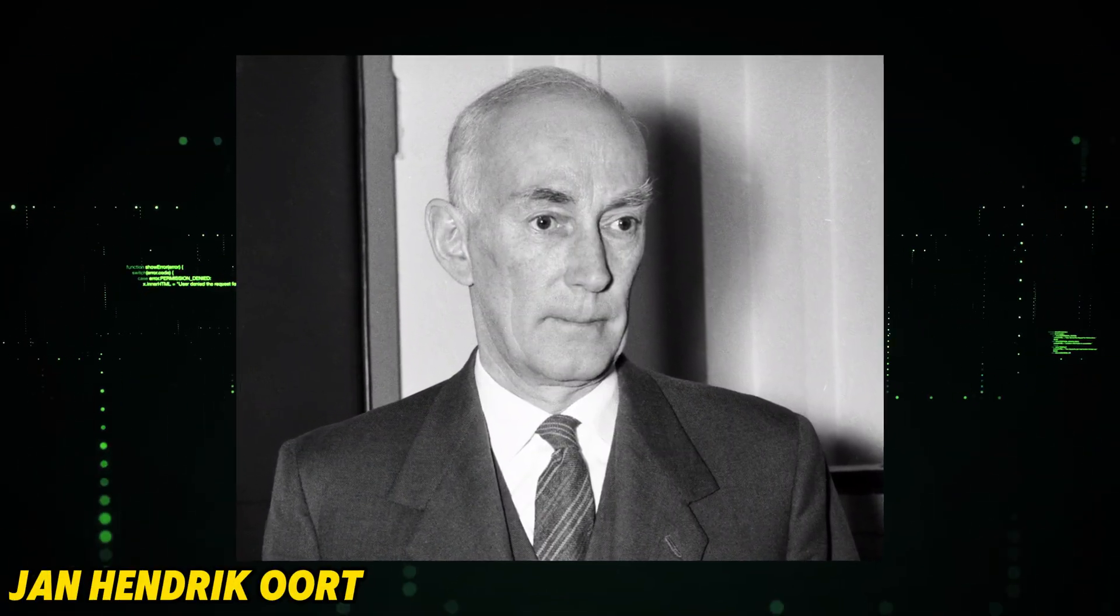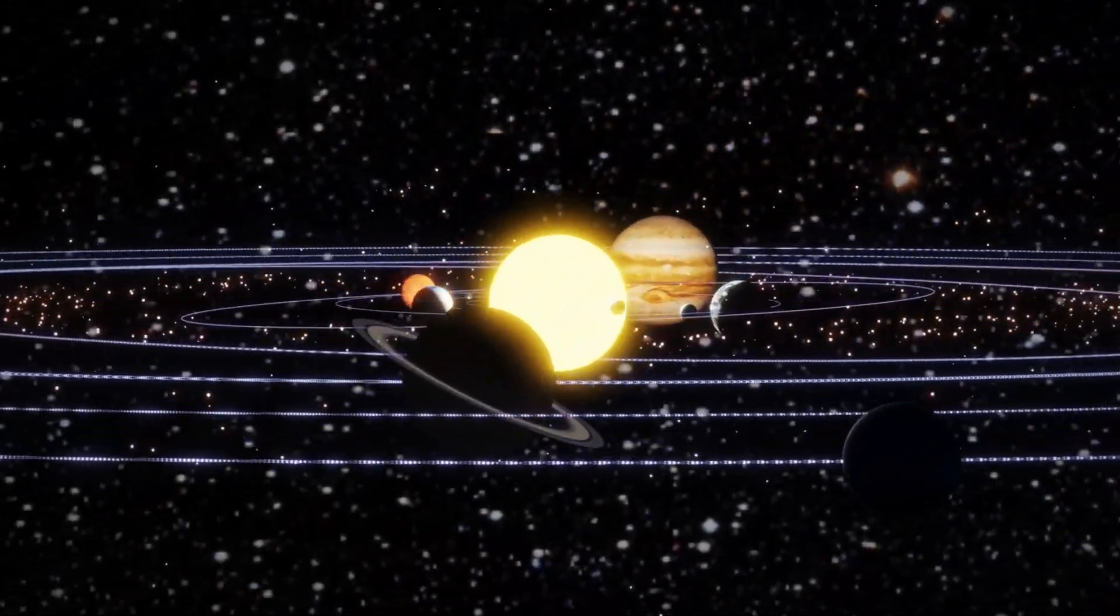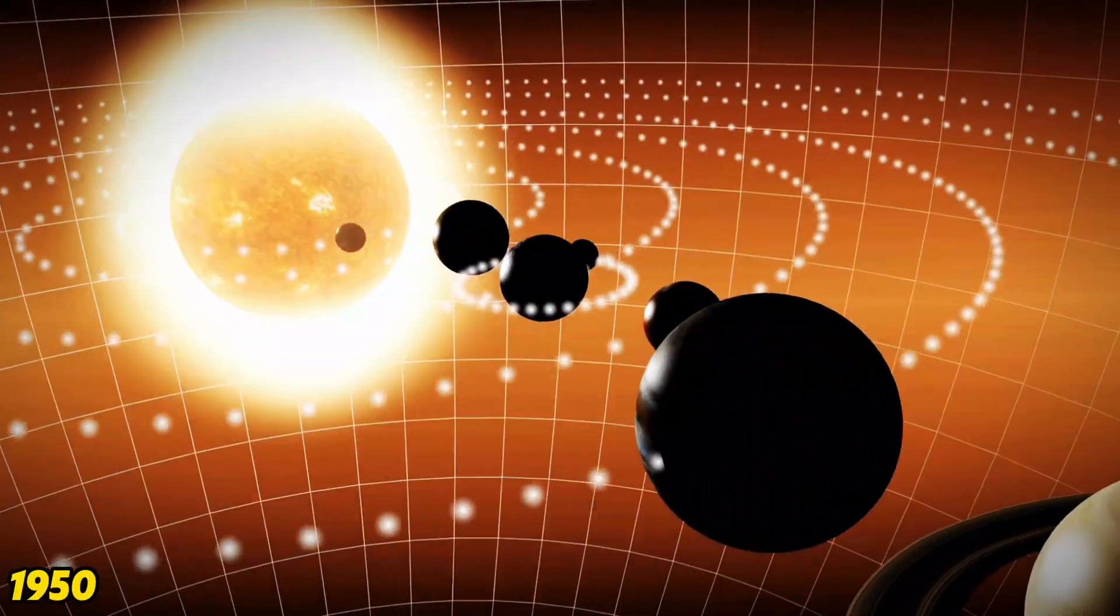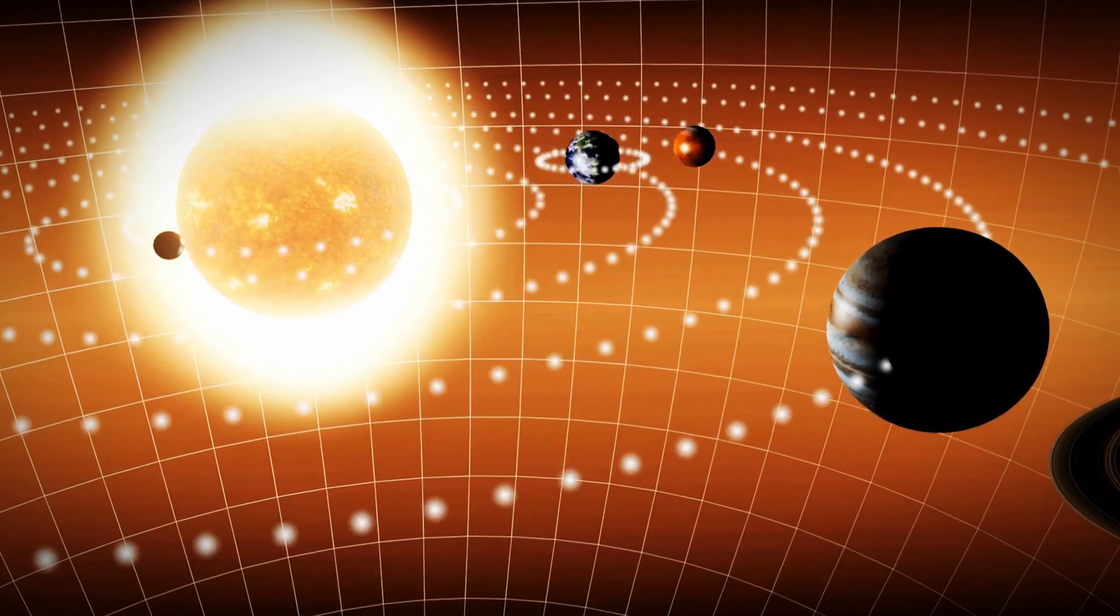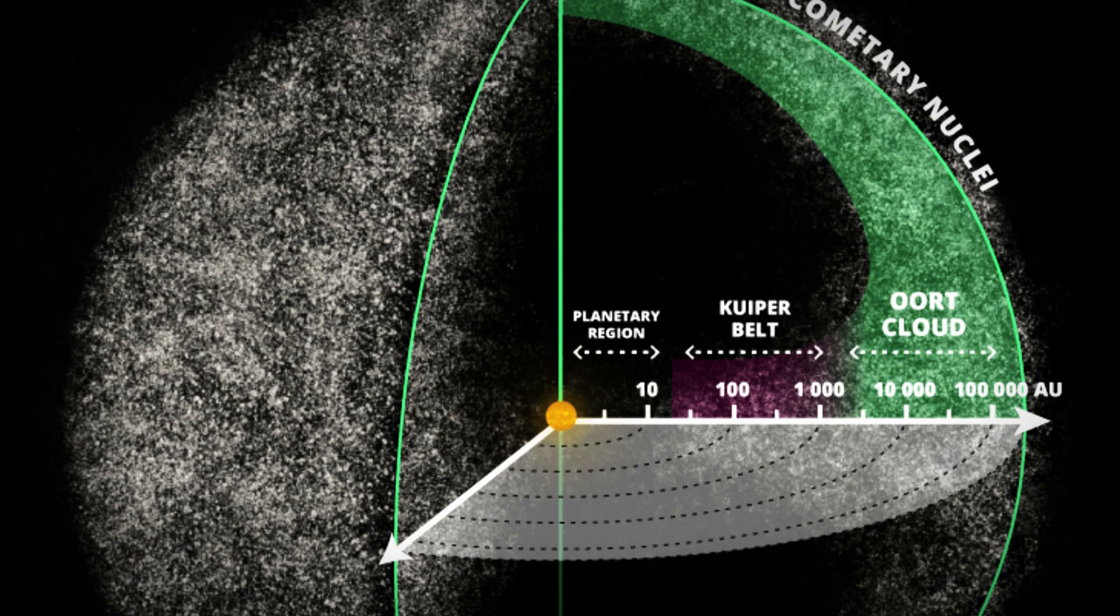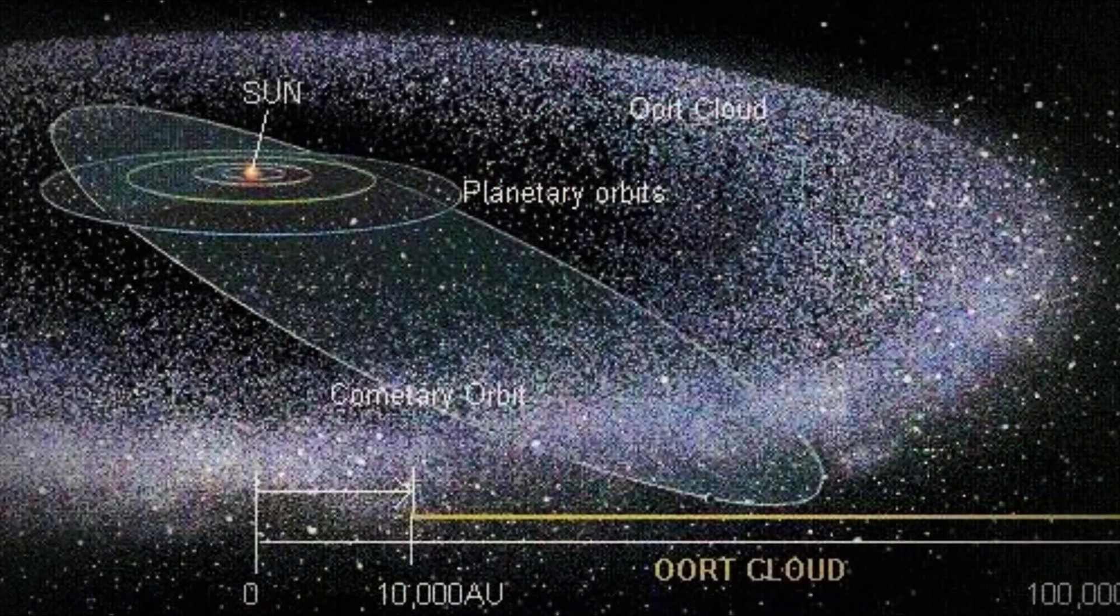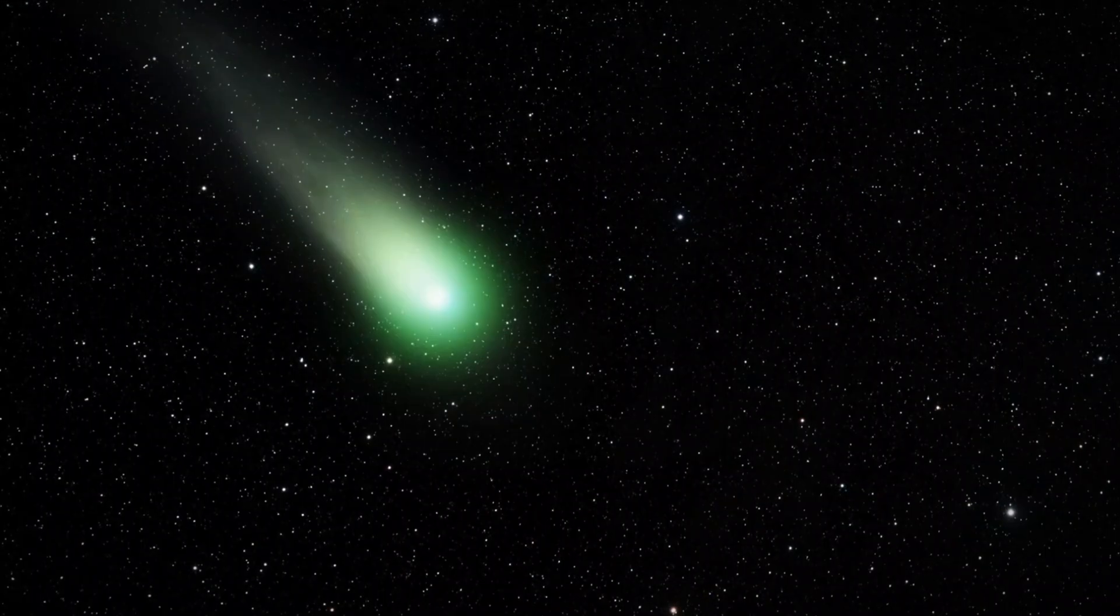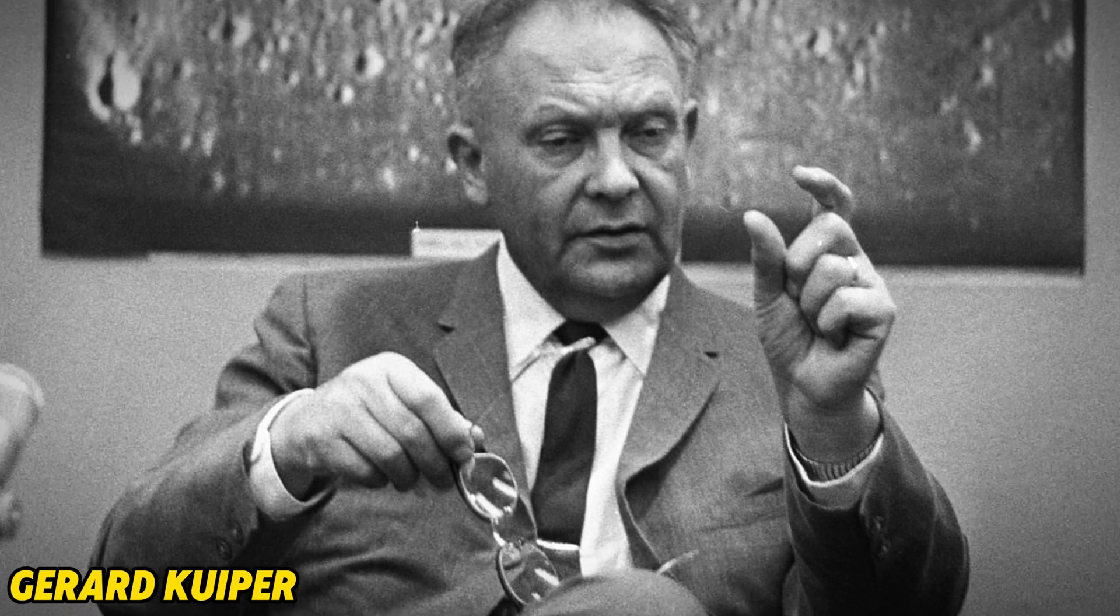Have you ever wondered where comets come from? Dutch astronomer Jan Hendrik Oort shared your curiosity. Unsatisfied with the vague notion that comets originate somewhere out there, he proposed in 1950 the existence of a spherical region at the edge of the solar system. This zone, now known as the Oort Cloud, serves as a natural reservoir for comet cores. However, while the Oort Cloud explained the orbits of long-period comets, it left short-period comets a mystery. Enter Gerard Kuiper, who stepped in the following year to shed light on their origins.